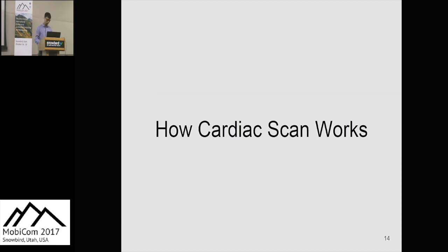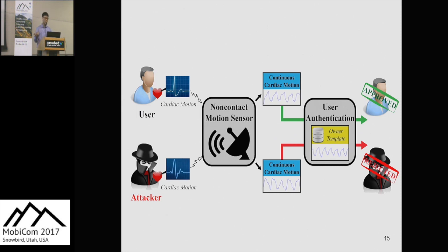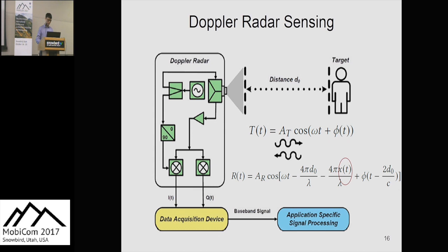The cardiac radar captures the authenticated user's cardiac motion information, which is stored in a database as an authentication credential. When the radar captures cardiac motion from an unknown user, it compares it with the pre-stored credential to authorize or reject access. The Doppler radar sends a transmitter signal T(t); due to Doppler effects from cardiac motion, the received signal R(t) contains a displacement component X(t), which is demodulated to extract heart features for classification and authentication.